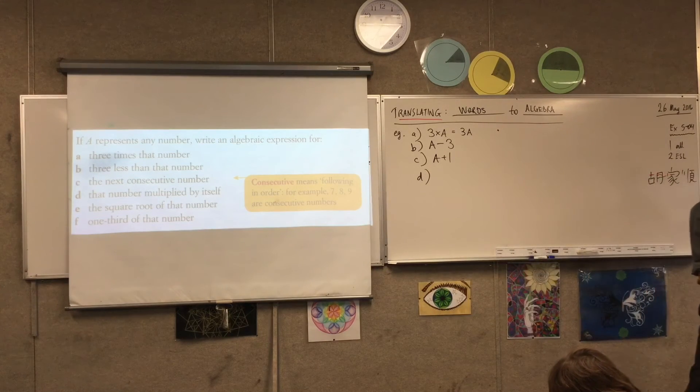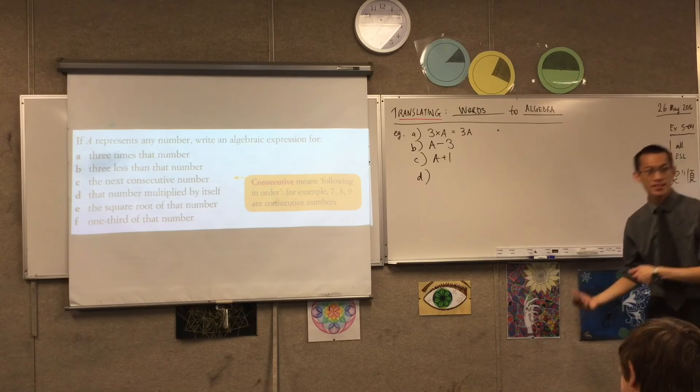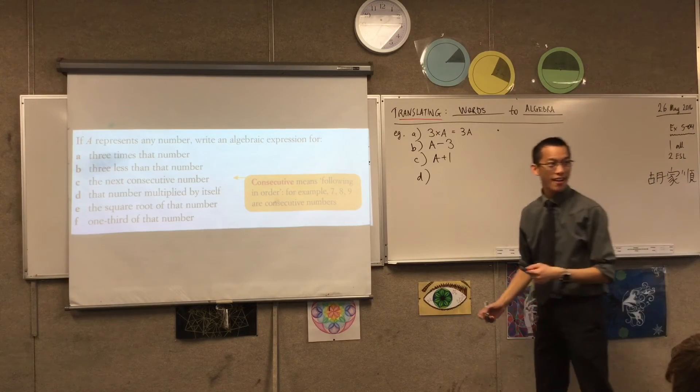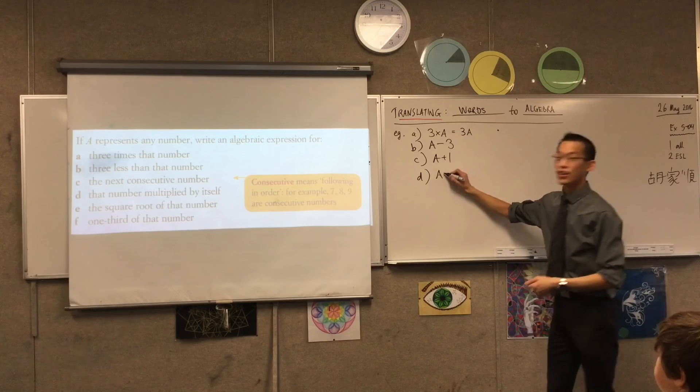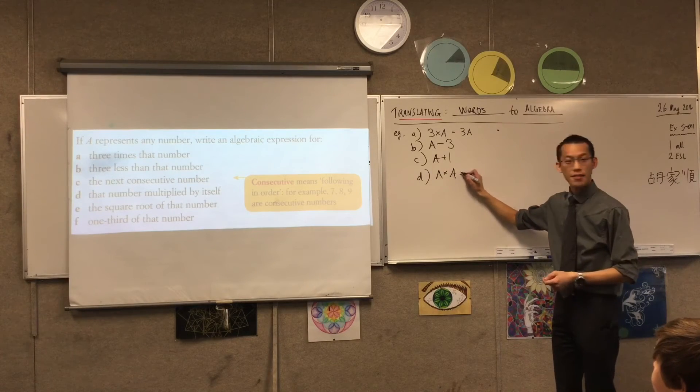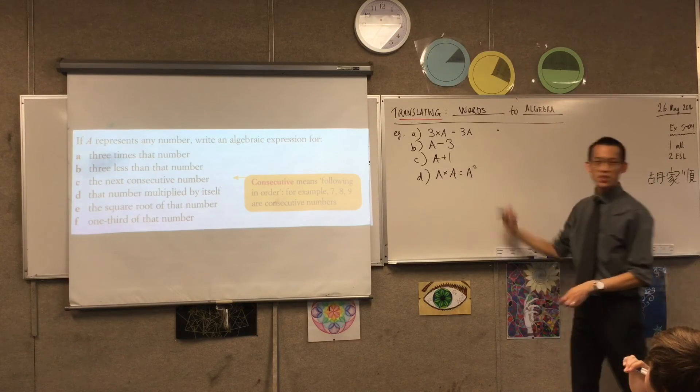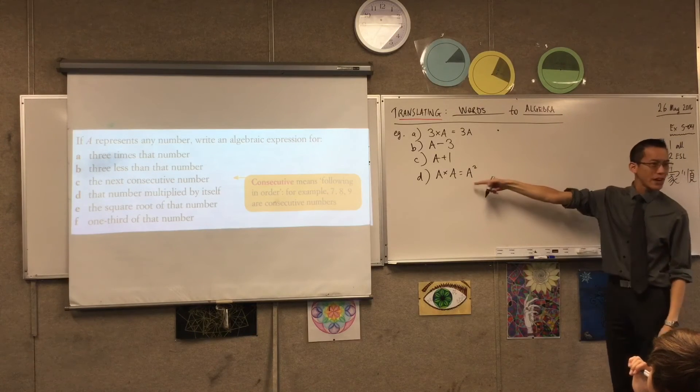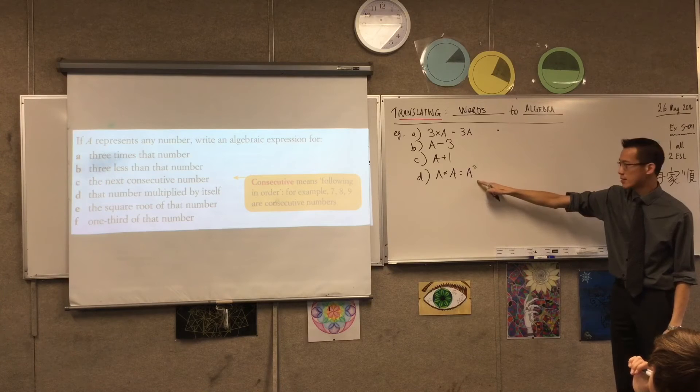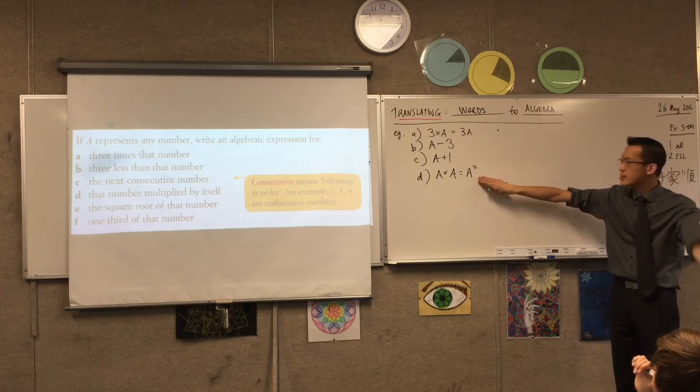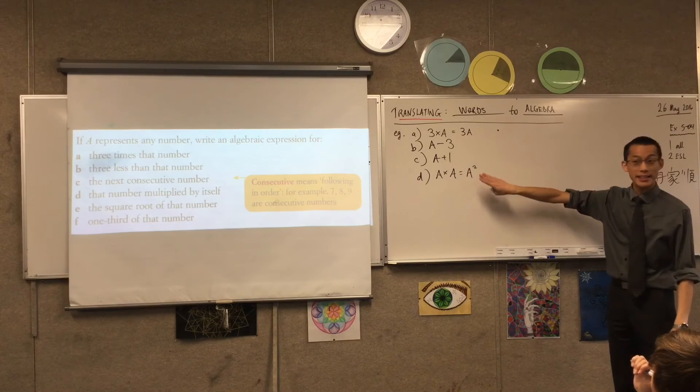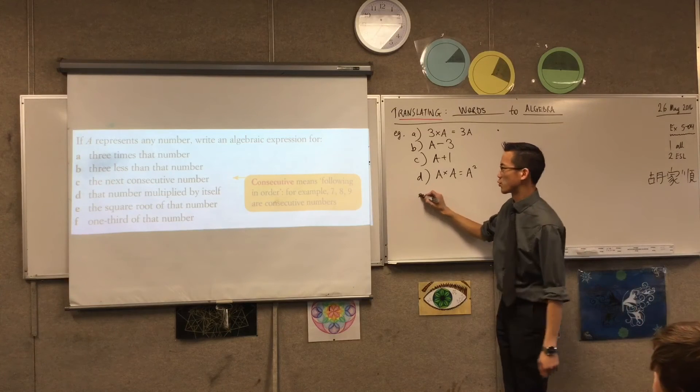Okay. The number multiplied by itself. Yeah, Maria. A times itself. Excellent. A times itself, and then I can go another step and be even more succinct. A squared. Fantastic. Okay. So now when you see this, you can read that as, oh, I know what that means. That just means whatever the number is, and I multiply it by itself. Okay. We're on the home stretch.